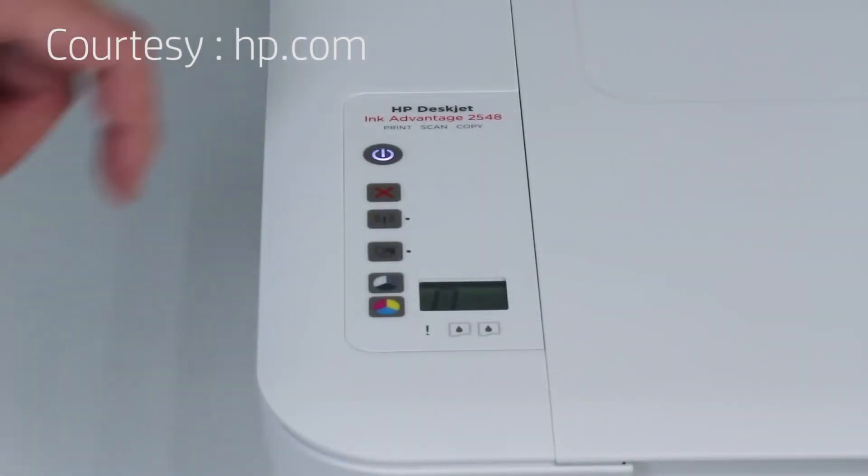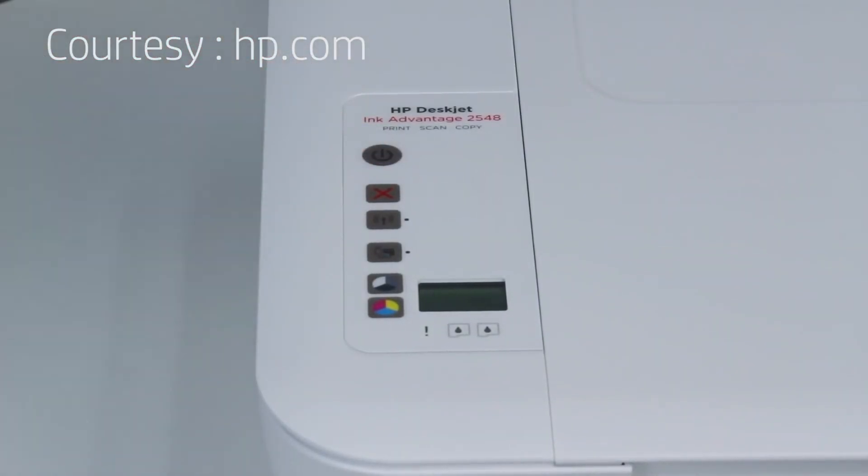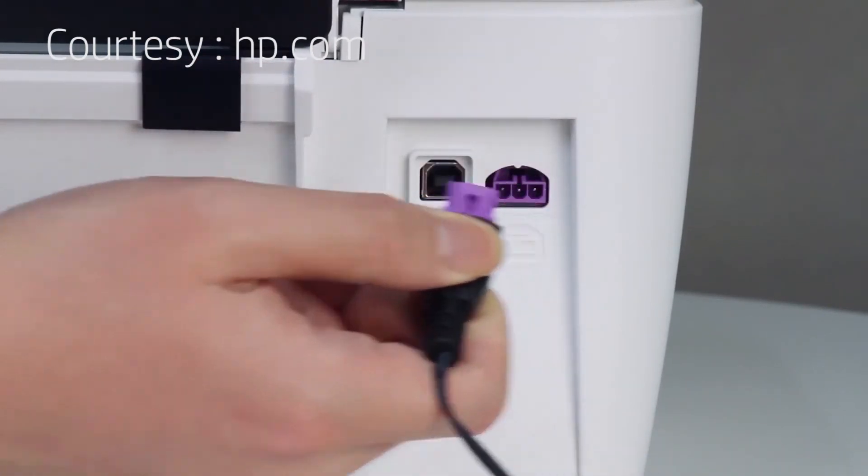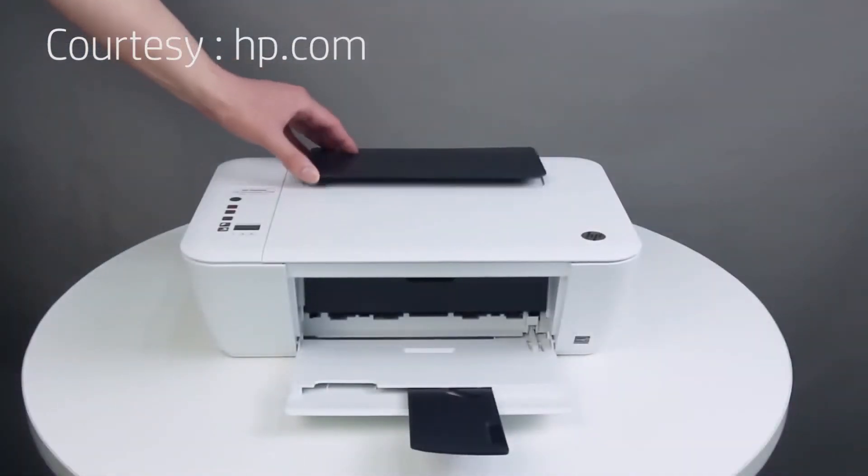Before you begin, you will need a long cotton swab and distilled or bottled water. Press the power button to turn off the printer. Disconnect the power cord from the back of the printer and raise the input tray.